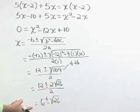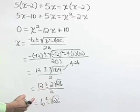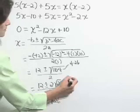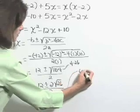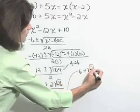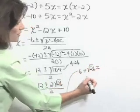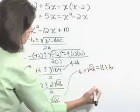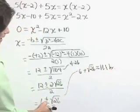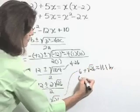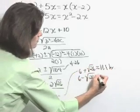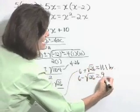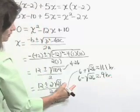Now, we want to write our answer in hours rounded to the nearest tenth. So let's use our calculator and clean these up a little bit. This 6 plus the square root of 26 is approximately 11.1 hours. Now, 6 minus the square root of 26, that's approximately 0.9 hours, and we've got a problem here.